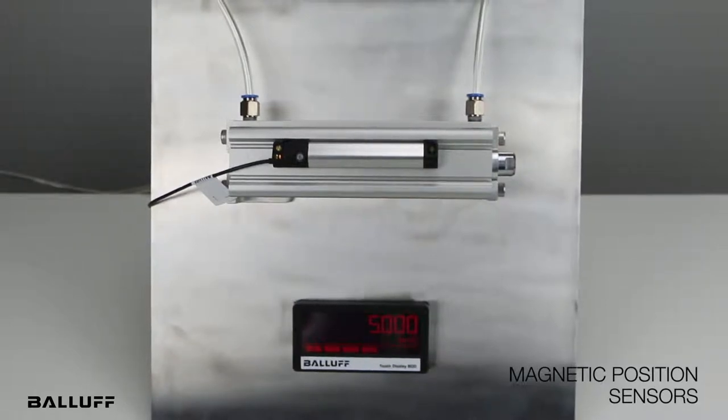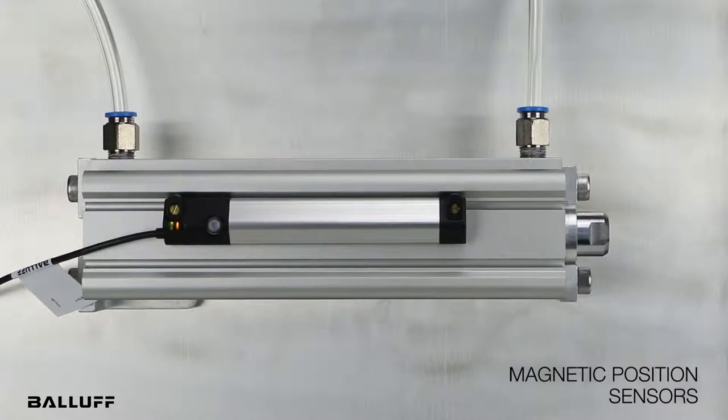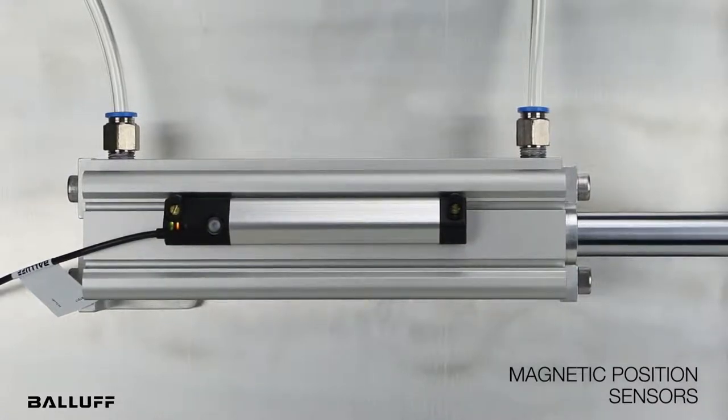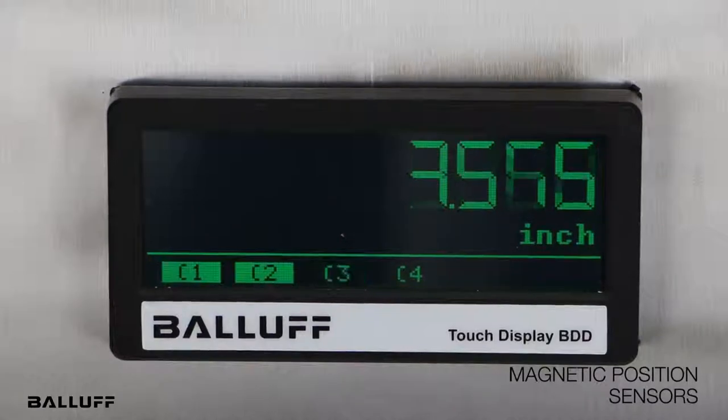They provide continuous position information over the entire cylinder stroke, an improvement over discrete pneumatic cylinder switches. These provide continuous linear feedback, detecting and measuring the position of pneumatic or hydraulic cylinder rods and actuators through non-ferrous housing walls over the entire measurement range and without contact.